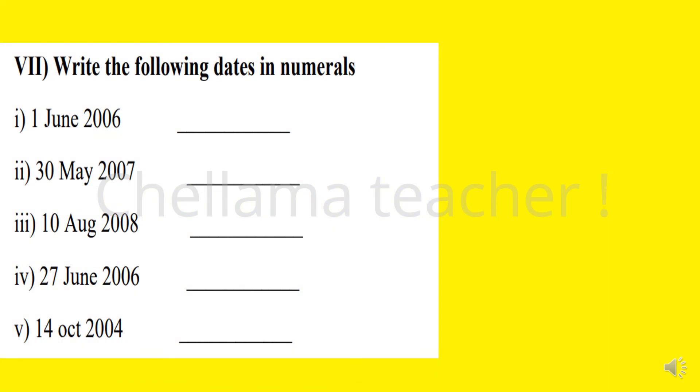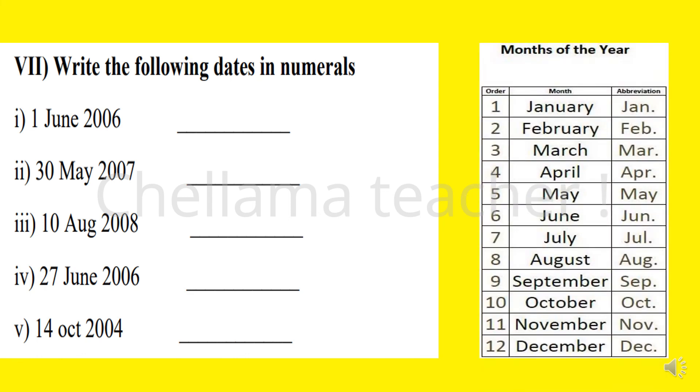Next question: Write the following dates in numerals. Question 1: 1 June 2006. For this kind of question, we must remember the month's name in a year and the number of that particular month. January is first month, February is second month, March is third month. Like this, we must remember.